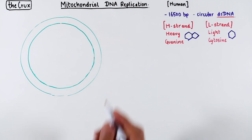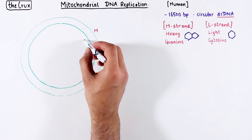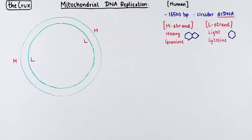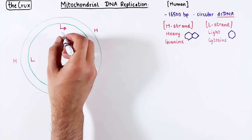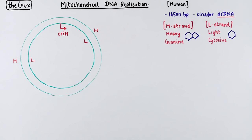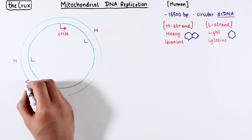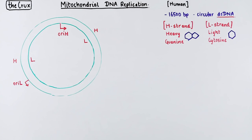For our discussion, we will call the outer strand the heavy strand, and the internal strand the light strand. You need to know that the L strand carries the origin of replication called OriH, whereas the heavy strand carries OriL.